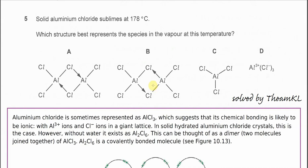Question 5. Solid aluminum chloride sublimes at 178 degrees C. Which structure best represents the species in the vapor at this temperature?